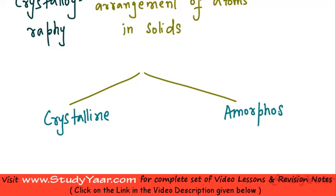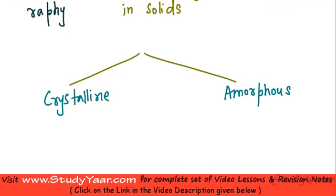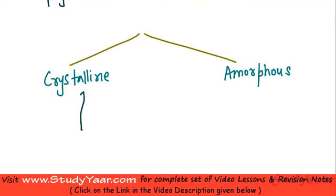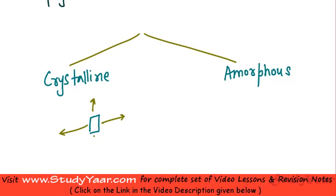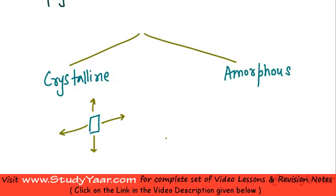In crystalline solids, atoms are arranged in a regular fashion. You can describe a minimal repeating pattern, and this pattern is repeated in every direction. Based on this pattern you can describe the properties of the crystalline solid.